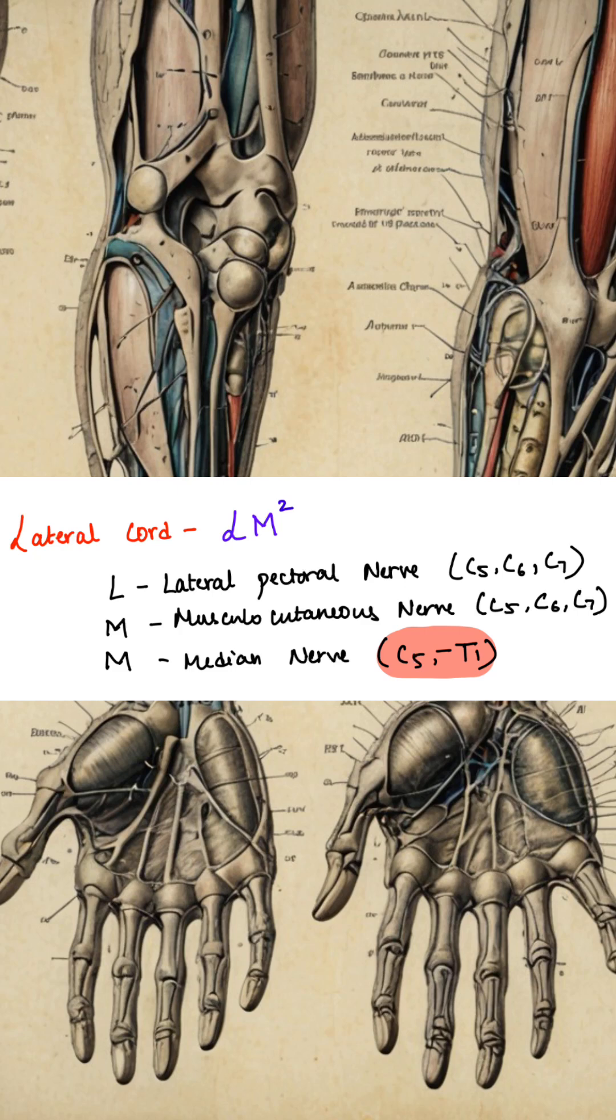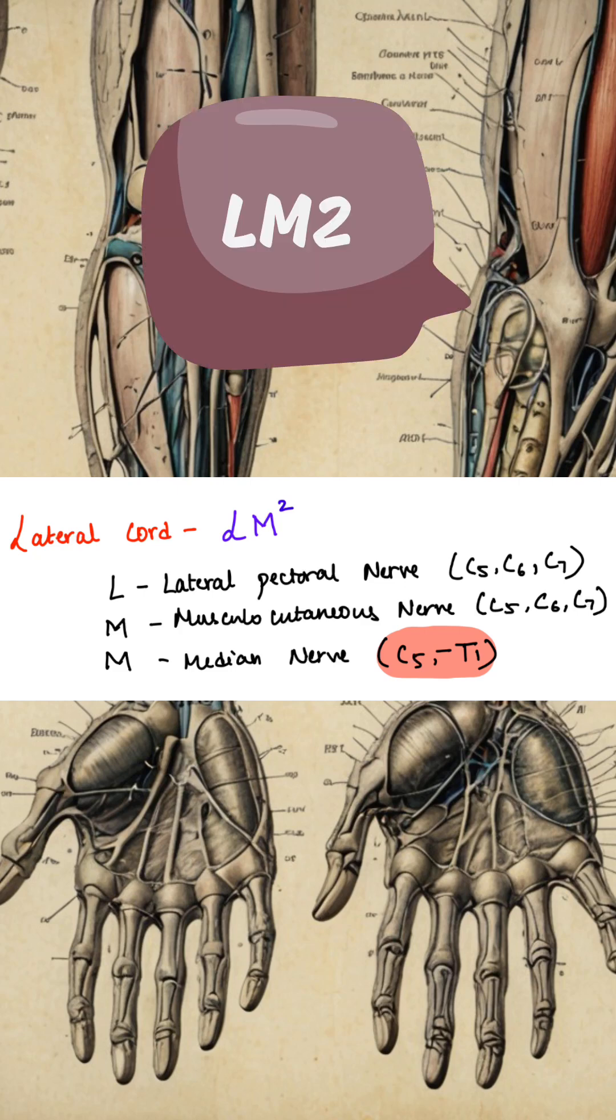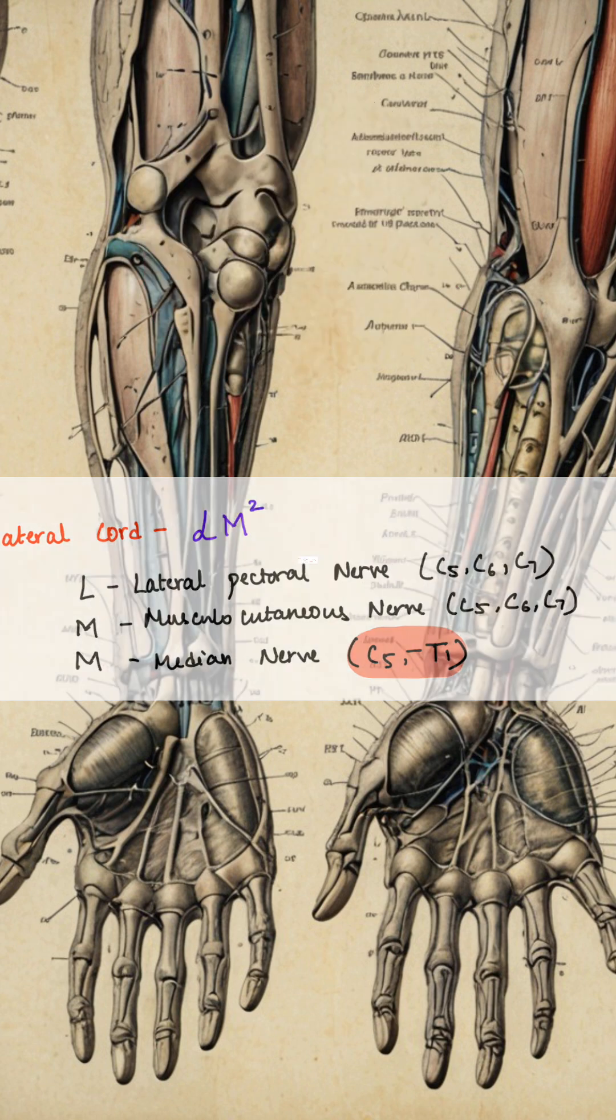Now quickly coming to the branches. So for the lateral cord, you can memorize the branches with LM square: lateral pectoral nerve, musculocutaneous nerve, median nerve.